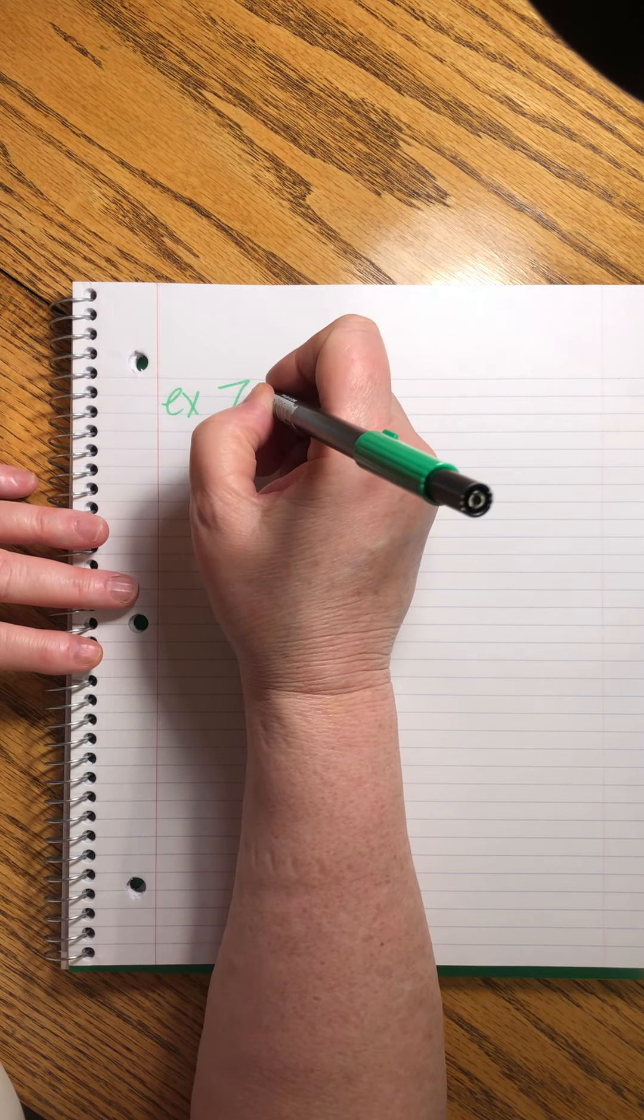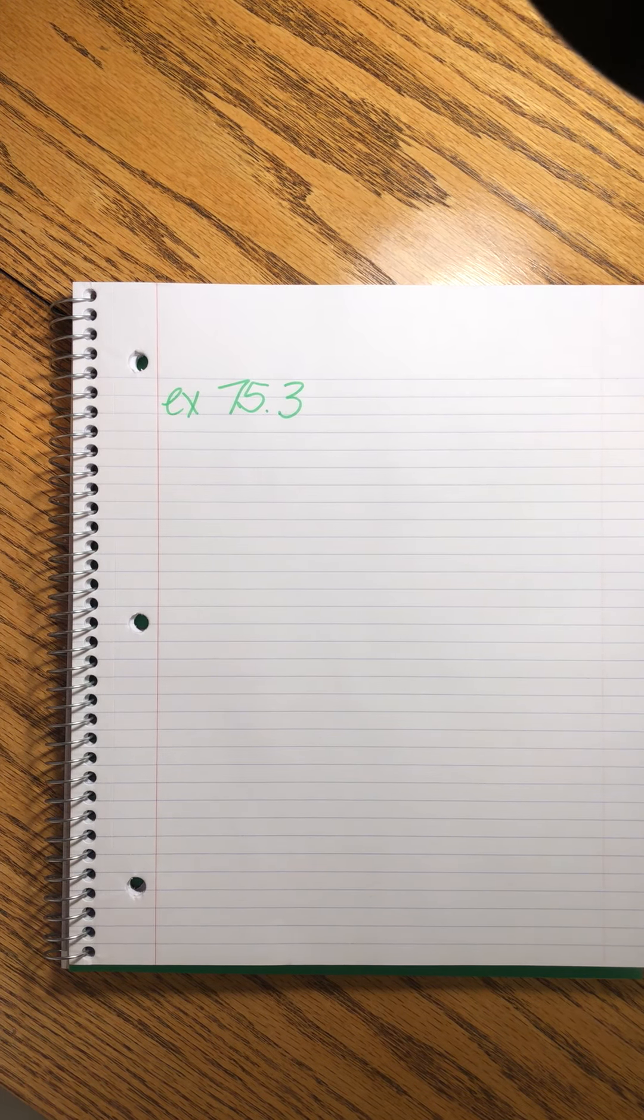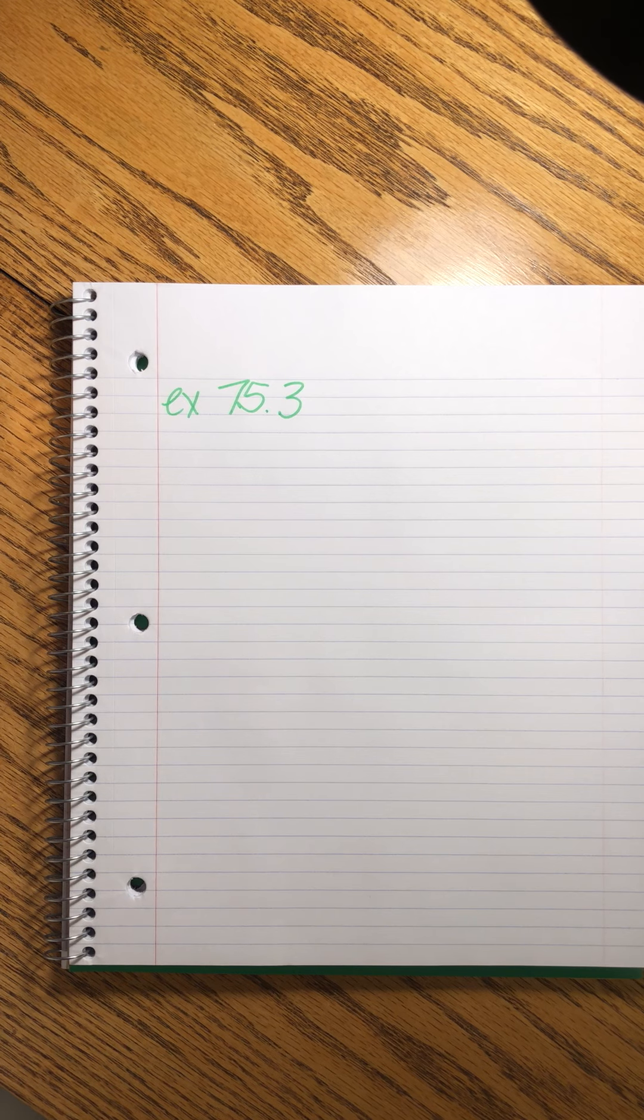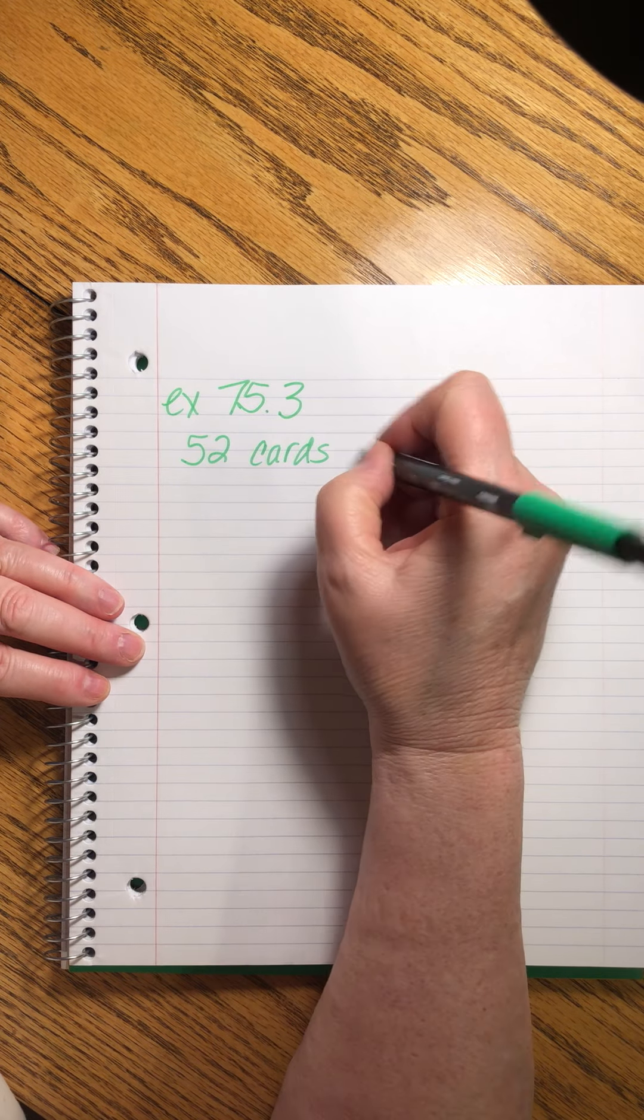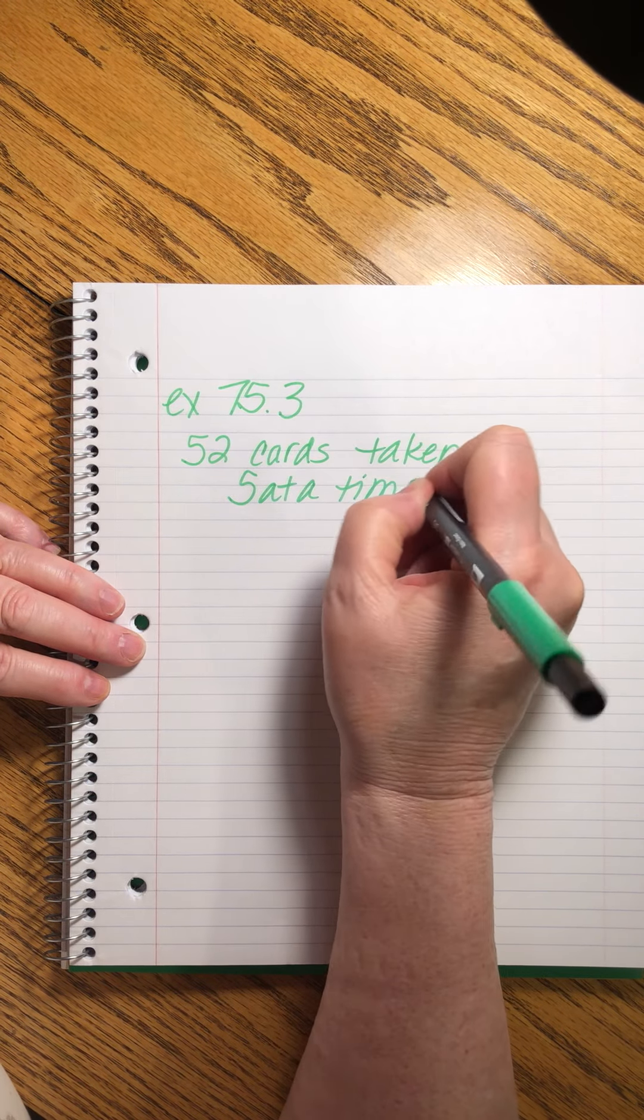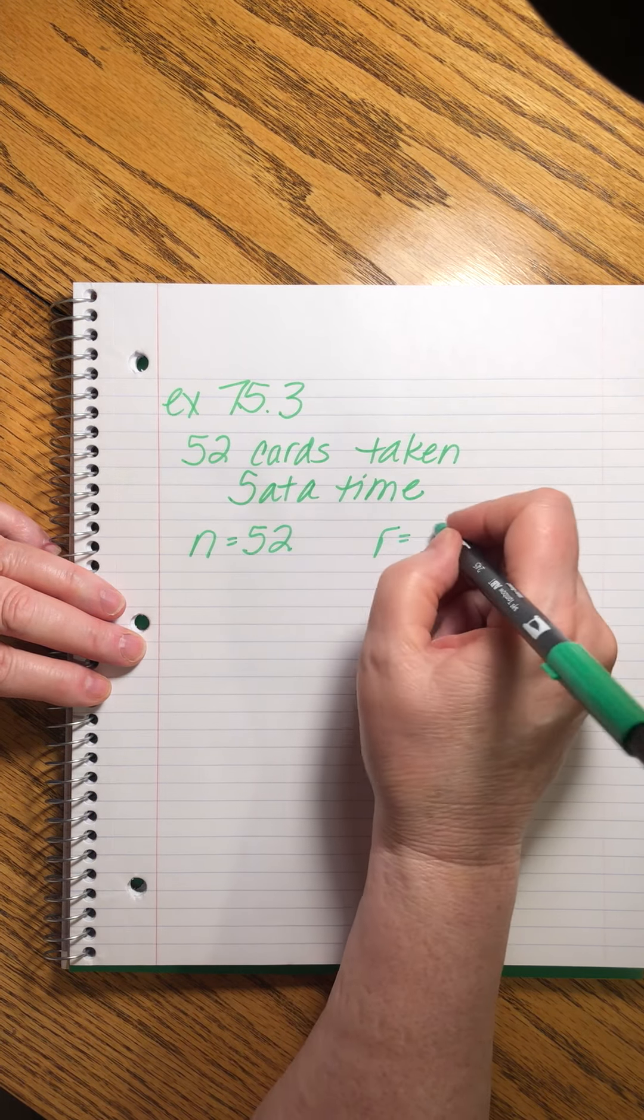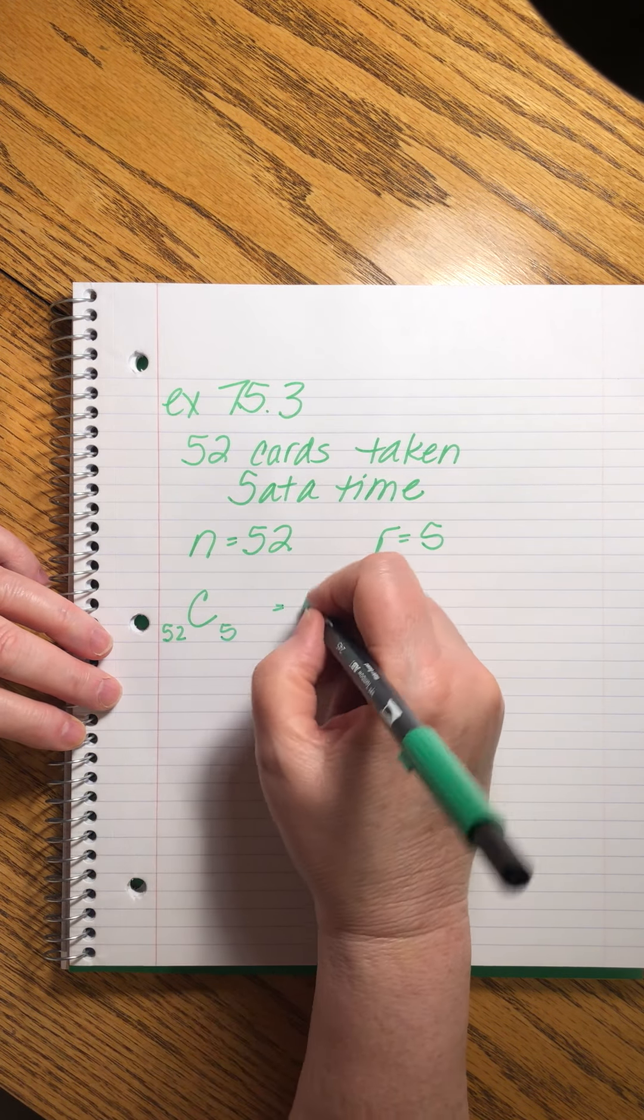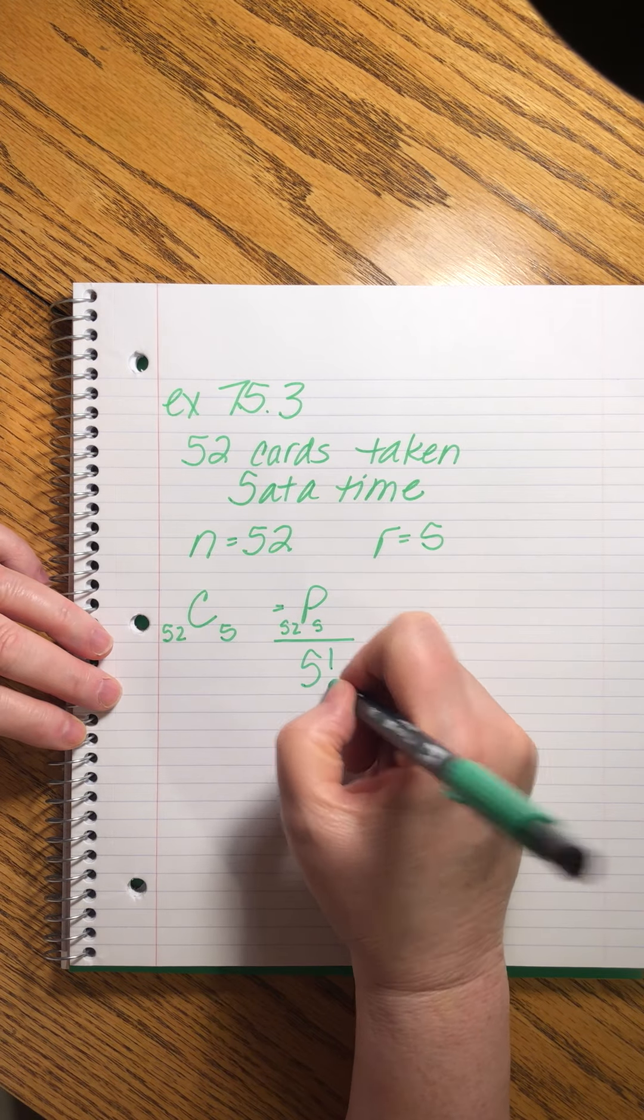Example 75.3. We're already on the last one. How many different five card hands can be dealt from a deck that contains 52 cards? So we can write this down. 52 cards taken five at a time. That's what the problem says. So we know that n equals 52 and r equals 5.